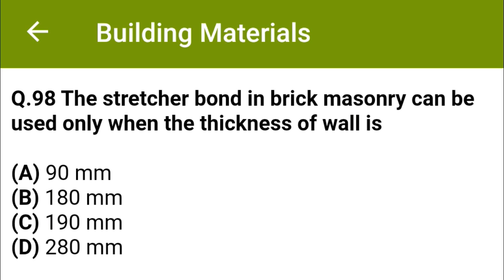A stretcher bond in brick masonry can be used only when the thickness of wall is: option A, 90 mm; option B, 180 mm; option C, 190 mm; option D, 280 mm. The correct answer is option A, 90 mm.